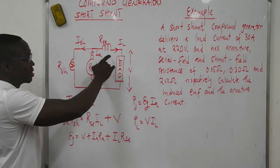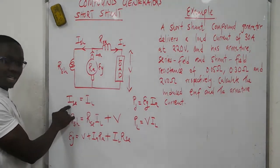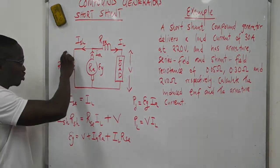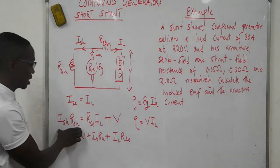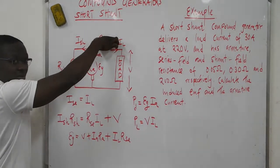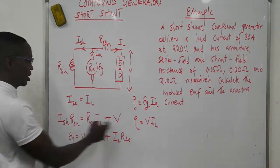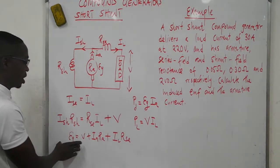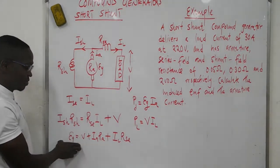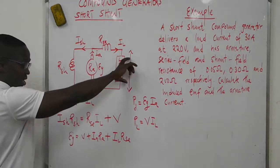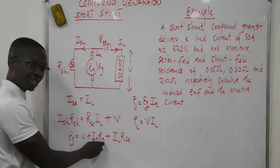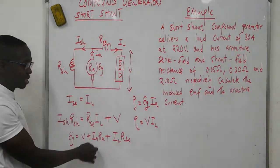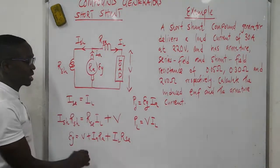The current passing through the series resistor is the same as the load current, so the series current equals the load current. The voltage drop across the shunt resistor is given by the voltage drop across the series resistor plus the voltage at the load. The generated voltage in the armature is given by the voltage at the load plus the product of armature current and armature resistance, as well as the voltage drop across the series resistance.